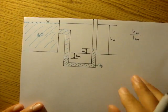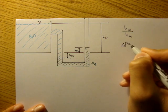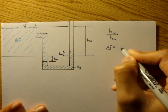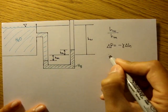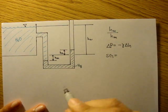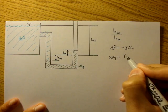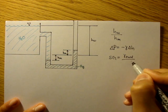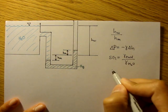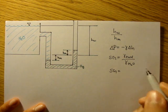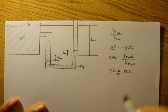So let's start with our equation: ΔP is equal to negative γ times ΔH. We also want to note that specific gravity is the gamma, or specific weight, of the fluid we're studying over the gamma of water. And they give us the specific gravity of mercury is equal to 13.6.